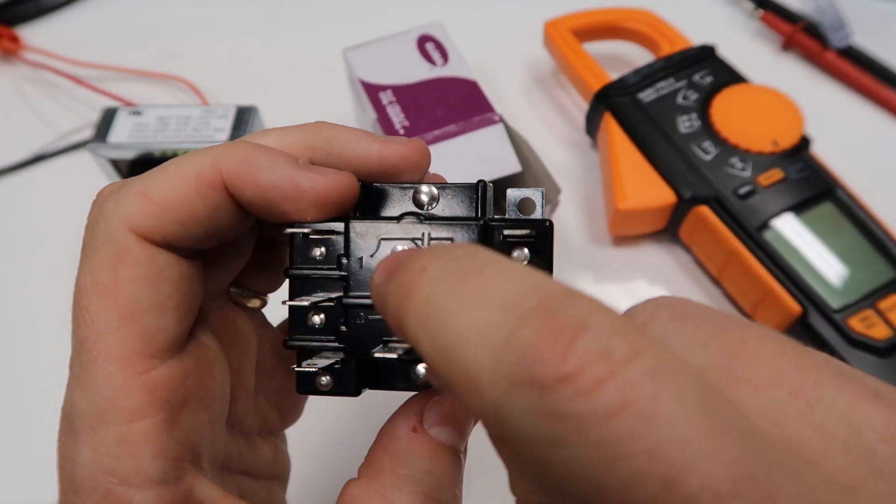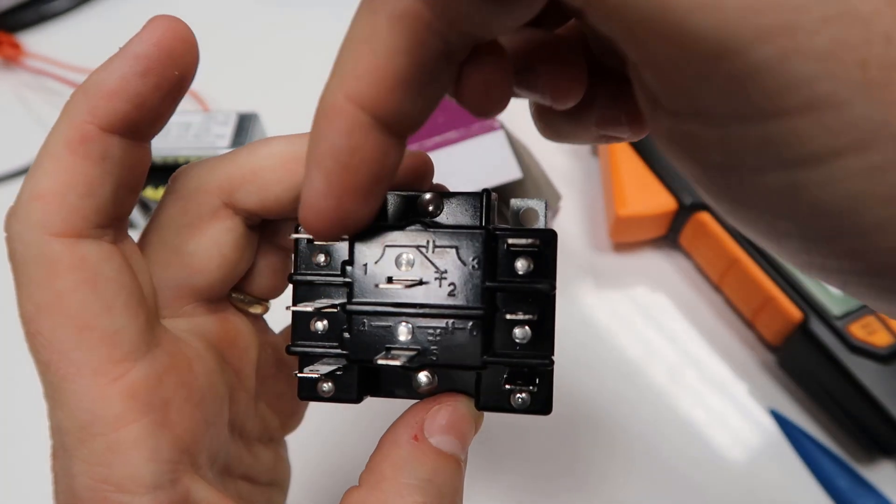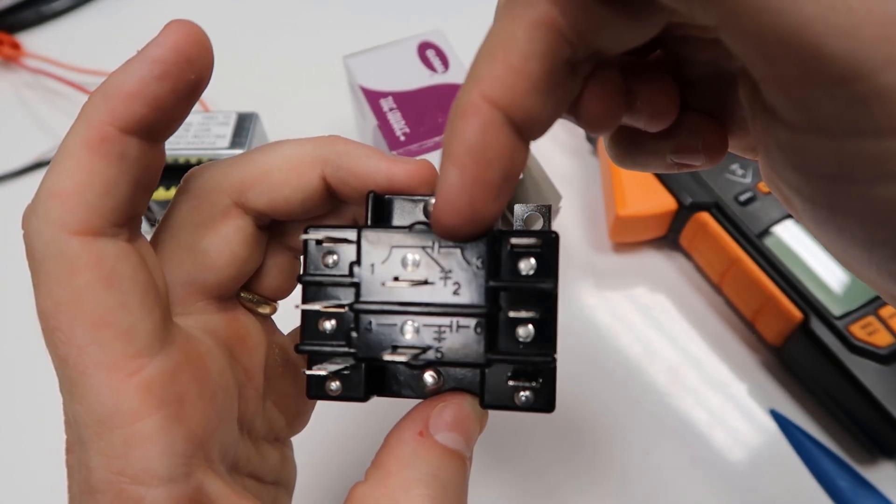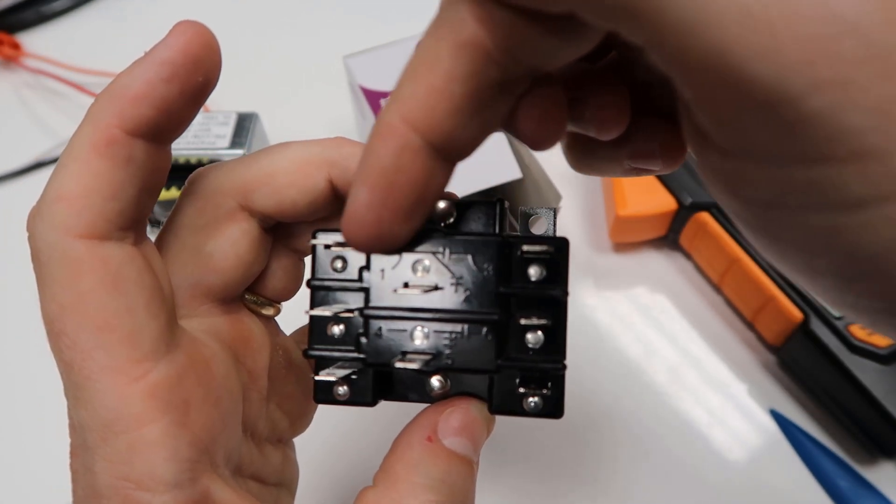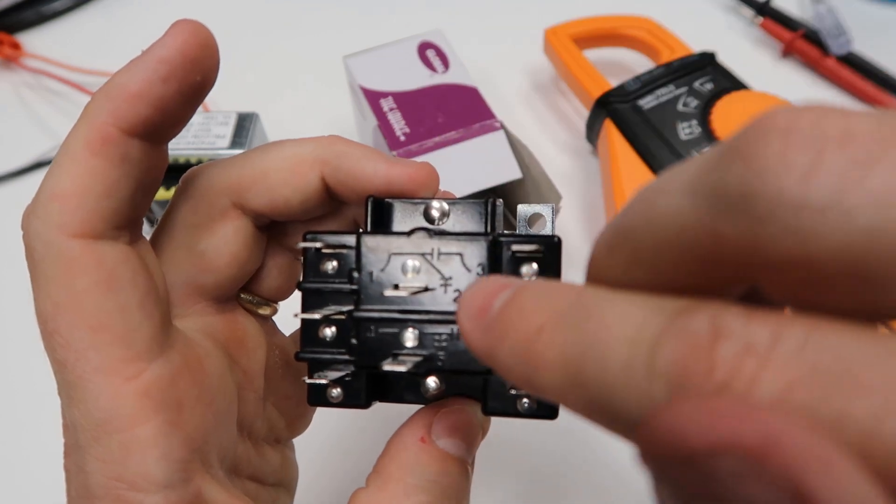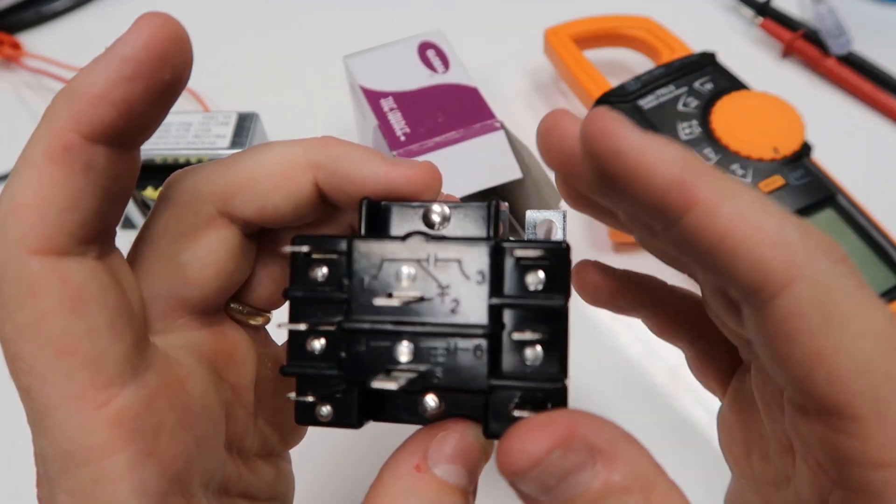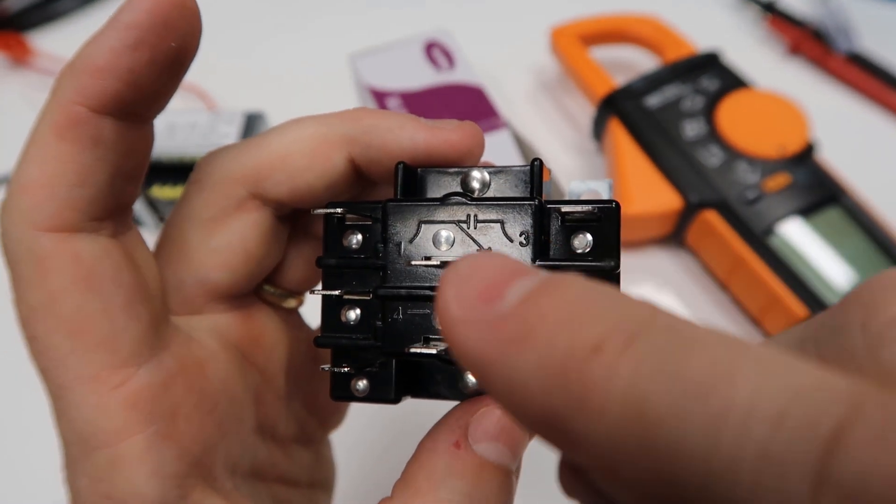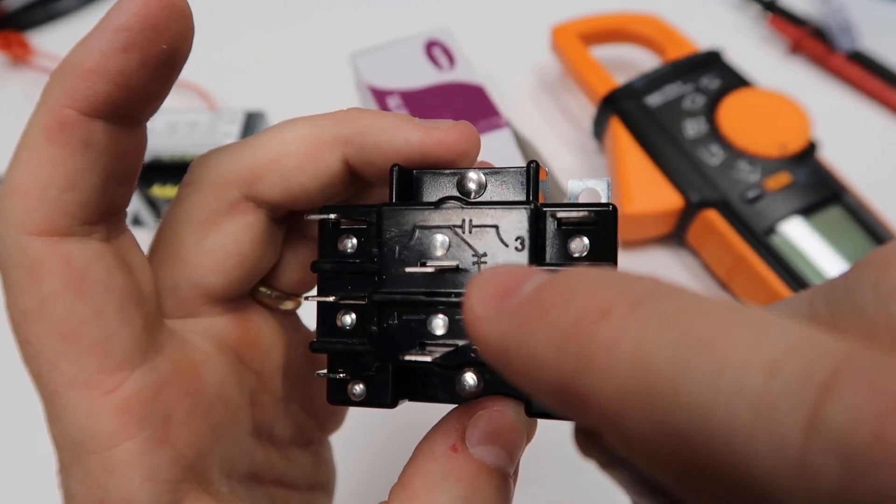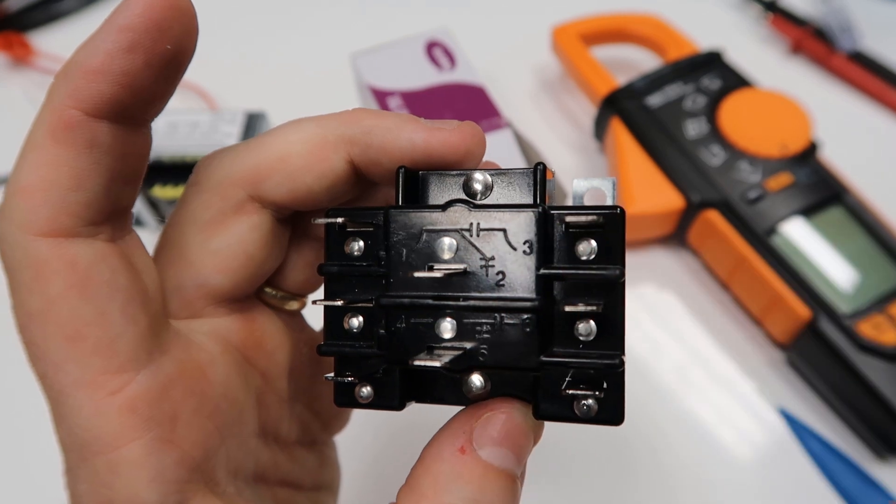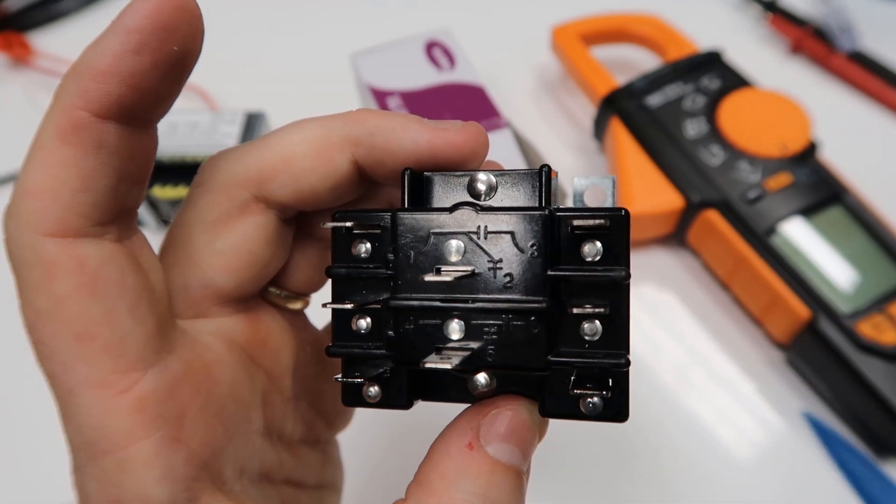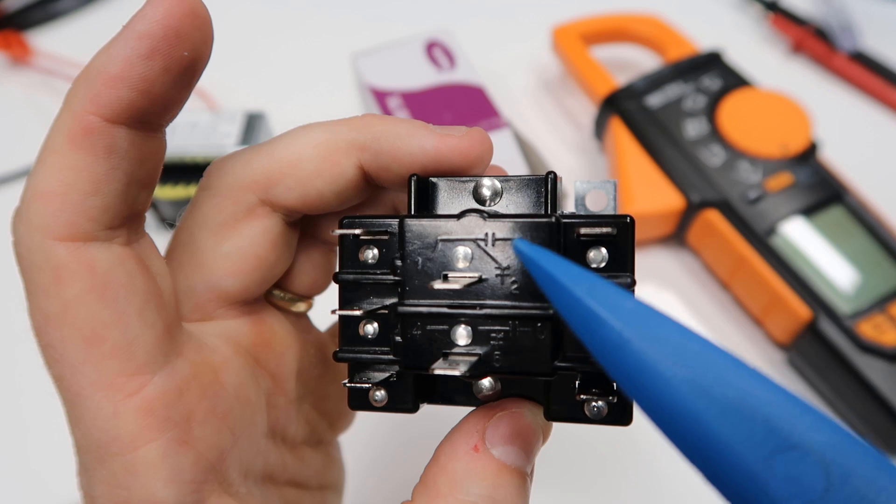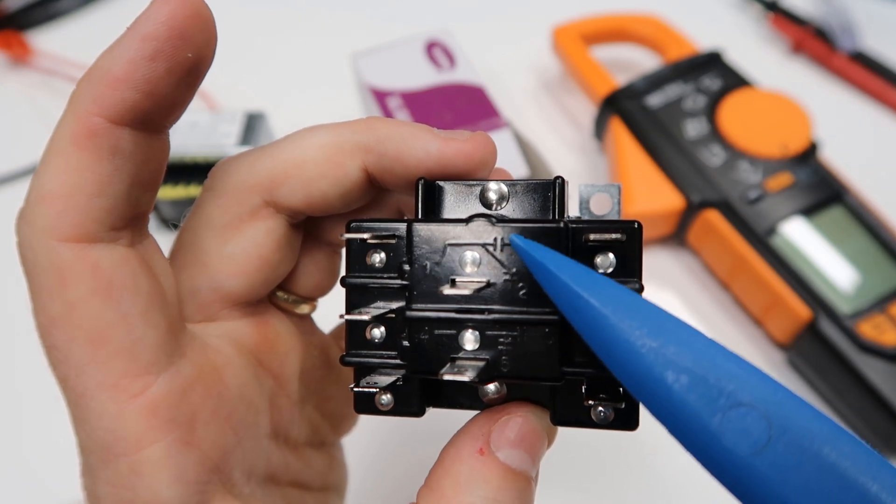It actually shows the connection points. You can see that 1 is connected to 3 through a set of normally open contacts. 1 is connected to 2 through a set of normally closed contacts. If you don't have a lot of experience reading diagrams, this little symbol here, the two lines with the slash through it, that's normally closed. That little symbol there is normally open contacts.